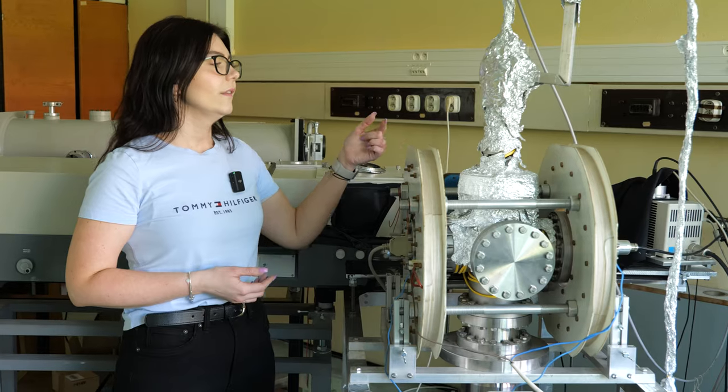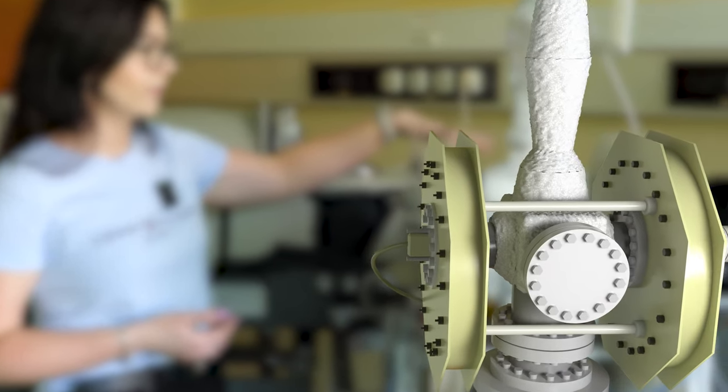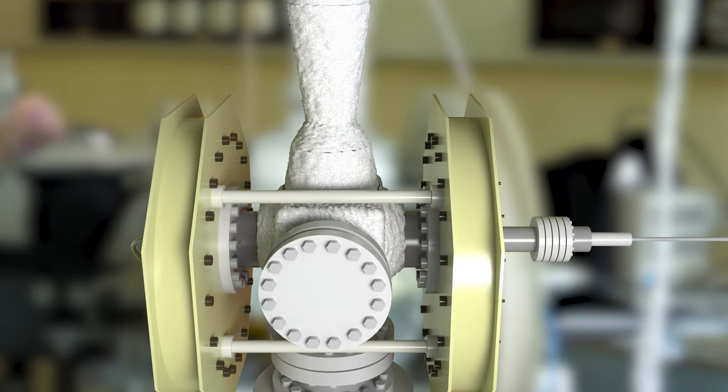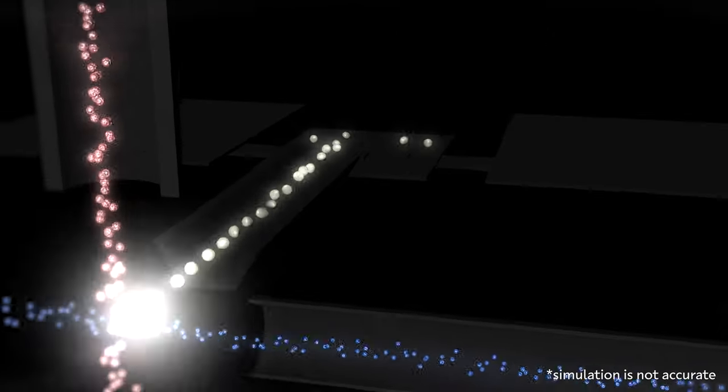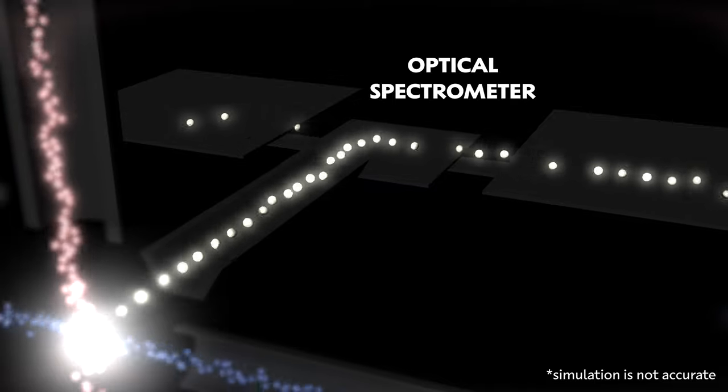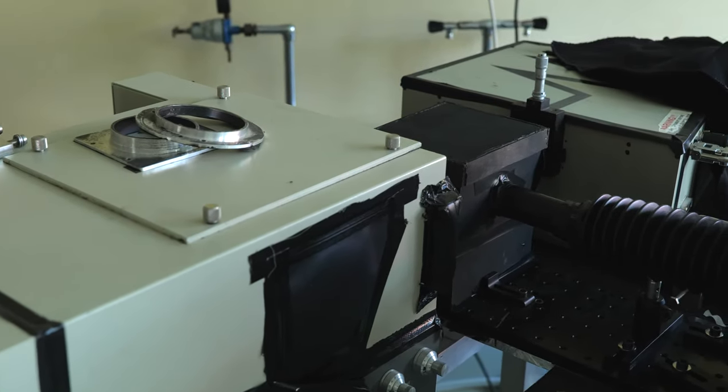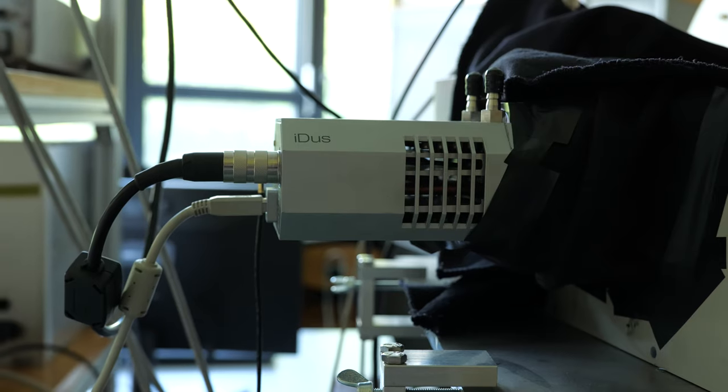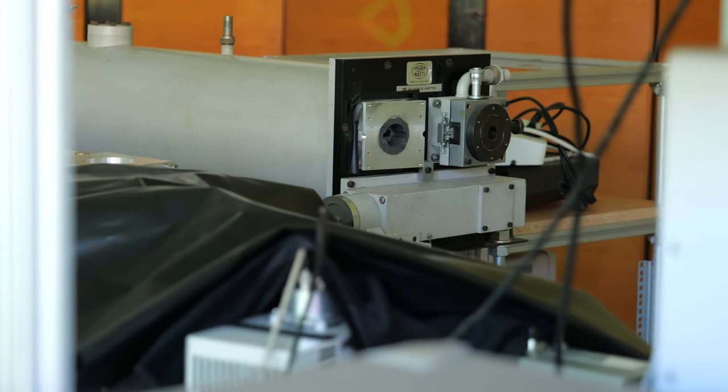These photons are then directed out of the vacuum chamber into our optical system, more specifically into an optical monochromator which separates our photons according to the wavelength. Then these photons are analyzed by two detectors, either a photomultiplier or a CCD camera. These detectors give information on the emission spectra and also excitation emission functions.